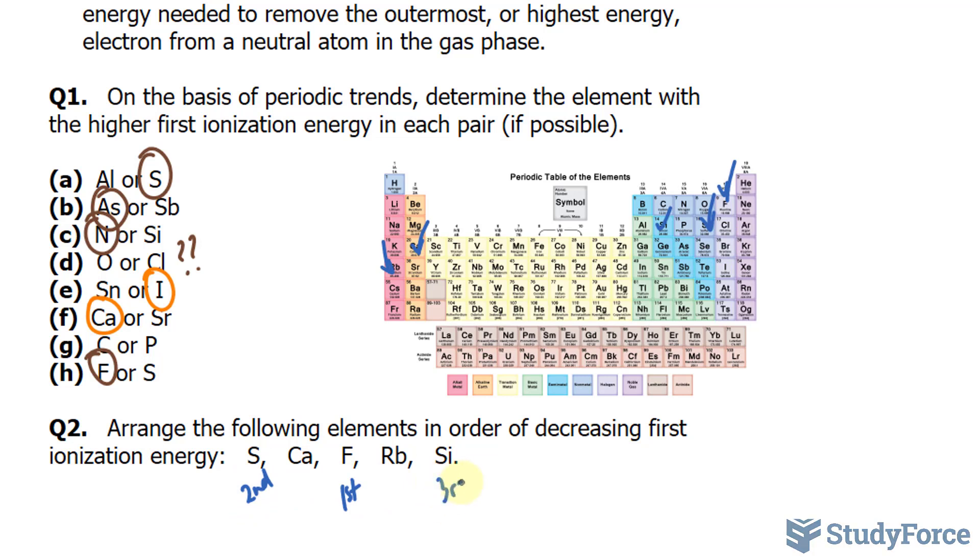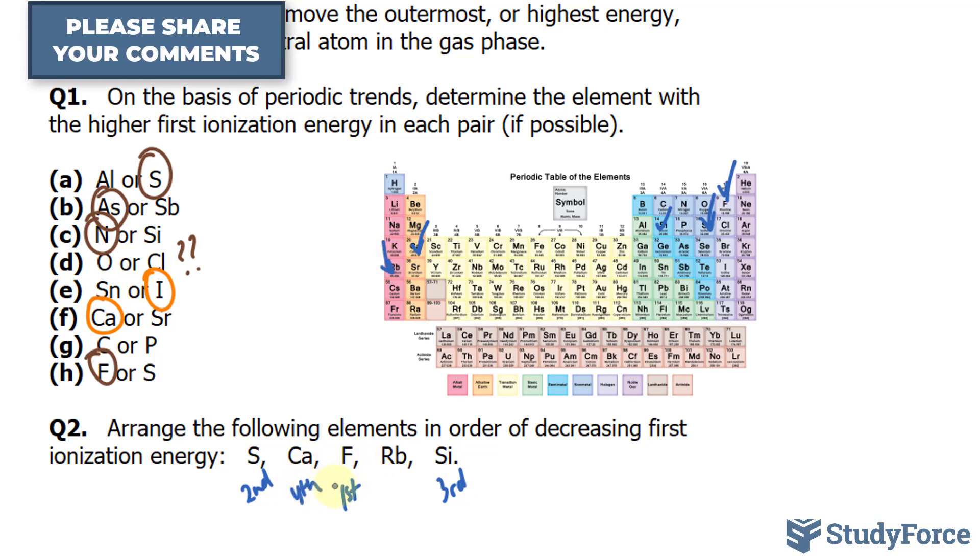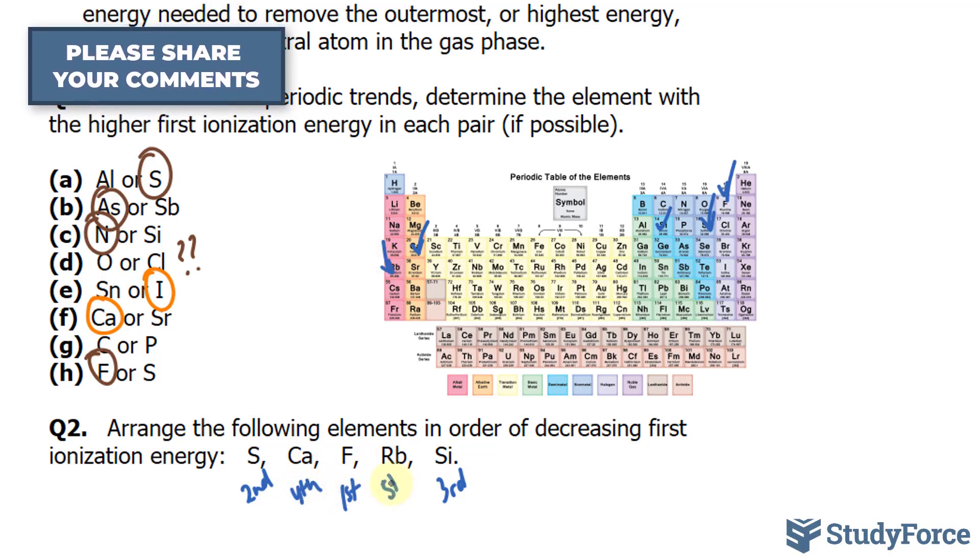Silicon is third, and calcium will be fourth because it is one column up and to the right. And rubidium will be last. And there you have it.